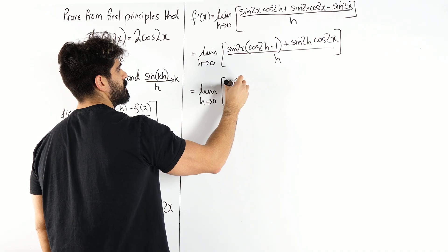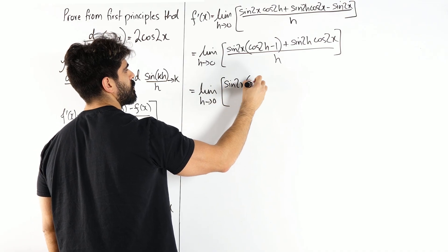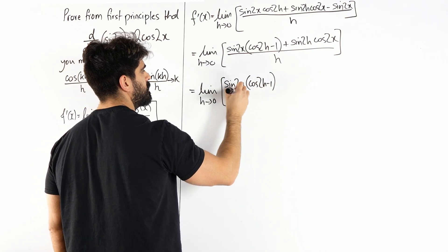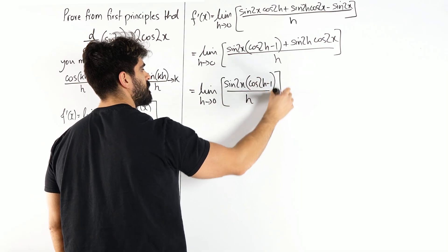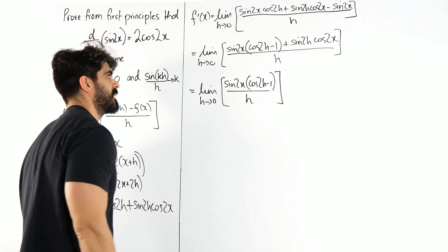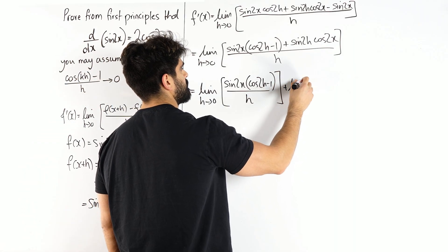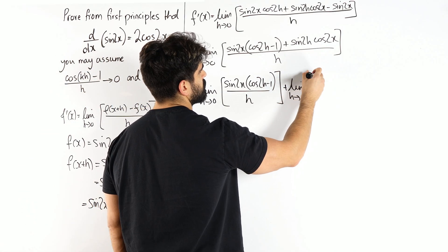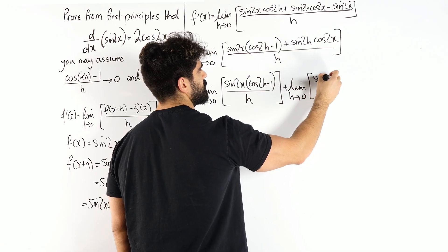So we have the limit as h tends to 0 of sine 2x(cos 2h minus 1) all over h, as a split fraction, plus the limit as h tends to 0 of sine 2h cos 2x over h.